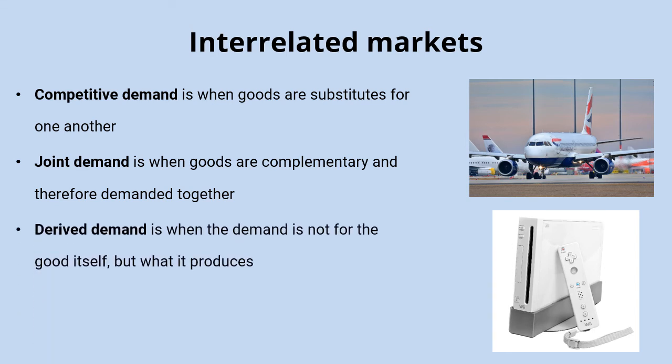Goods in joint demand are complementary products — for example, an increase in the price of games consoles leads to a reduction in demand for controllers, since fewer people buying consoles means fewer people need controllers. Derived demand is where demand is not for the good itself but for the output it generates — for example, firms demand workers not for their company but because they produce output. So an increase in demand for houses increases demand for construction workers, and increased demand for holidays at a location increases demand for flights there.